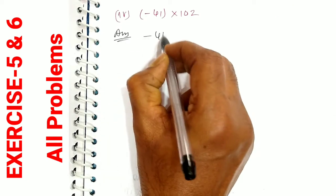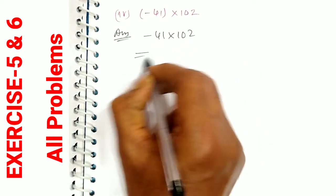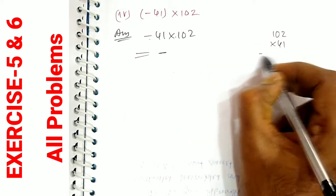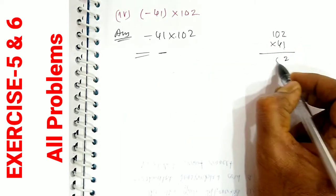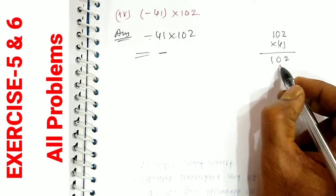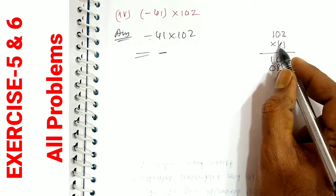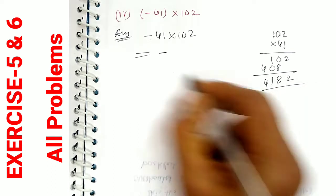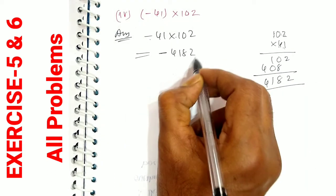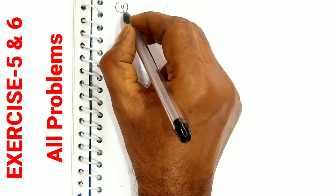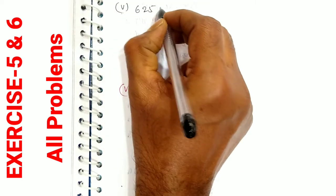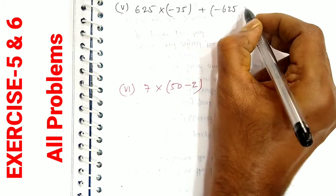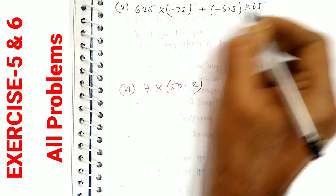Fourth bit: minus 41 into 102. Minus into plus is minus. So 102 into 41: 1 times 2 is 2, 1 times 0 is 0, 1 times 1 is 1; 4 times 2 is 8, 4 times 0 is 0, 4 times 1 is 4. Result is 4182. So the answer is minus 4182. Fifth bit: 625 into minus 35 plus minus 625 into 65. 625 is common. Taking 625 out: 625 into minus 35 plus minus 65, which gives minus 100. So 625 into 100 equals 62,500.